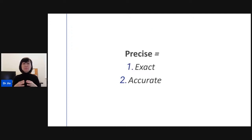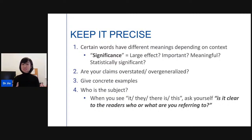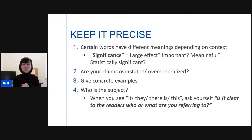The third element is to be precise — exact and accurate. This is important because you don't want your readers to misunderstand or misinterpret your results or argument. Certain words have different meanings depending on context. For example, 'significance': in everyday English it might mean large, important, or meaningful, but in a research paper it could mean statistically significant. You have to be very clear about what you mean when you use a certain word.